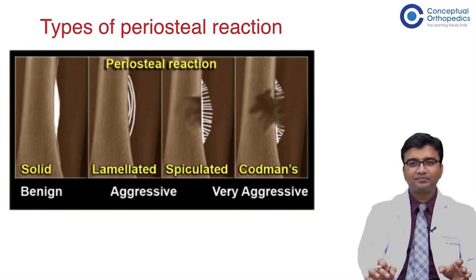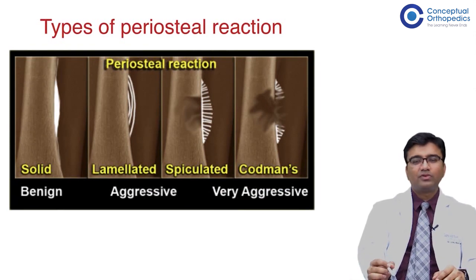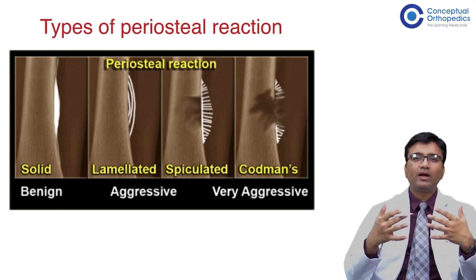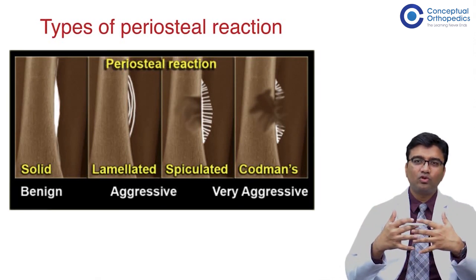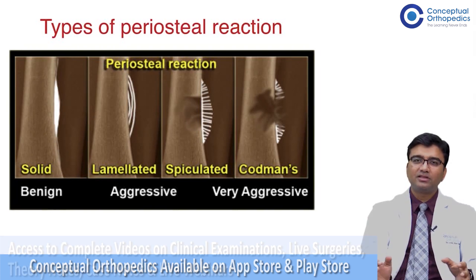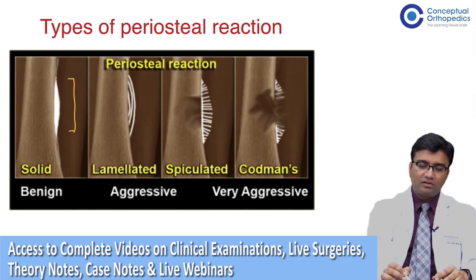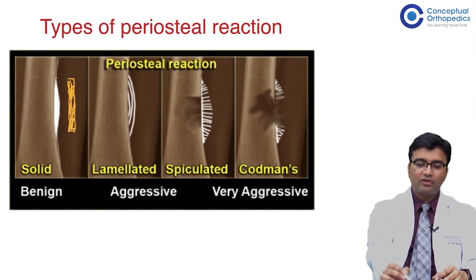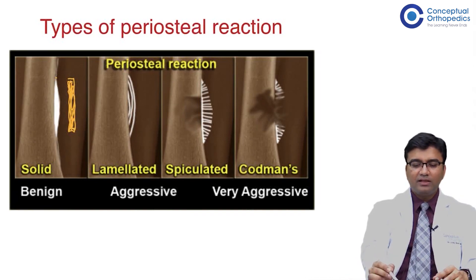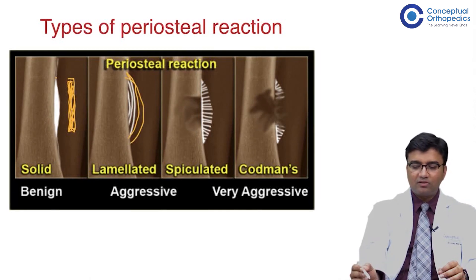Periosteal reaction is the response of the host to a pathological process. The pathological process tends to destroy bone while the host tries to contain the disease by forming new bone over it. By looking at the type of periosteal reaction you can identify whether the etiology is infective, benign, or aggressive. Broadly, the solid type shows a full solid reaction, mostly seen in infective processes. The laminated type, or onion-skin type, shows multiple layers and is seen in more aggressive types.